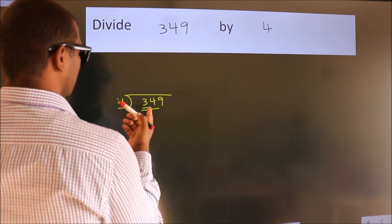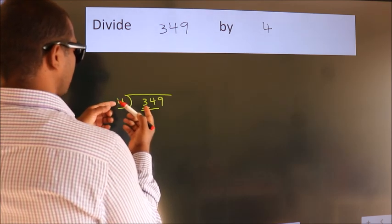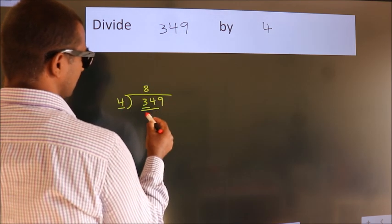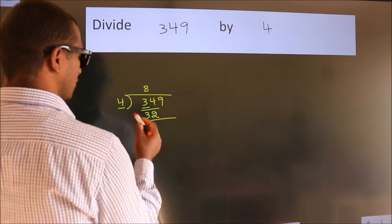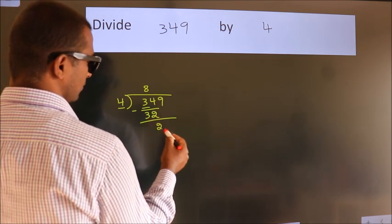A number close to 34 in the 4 table is 4 times 8 equals 32. Now we subtract and get 2.